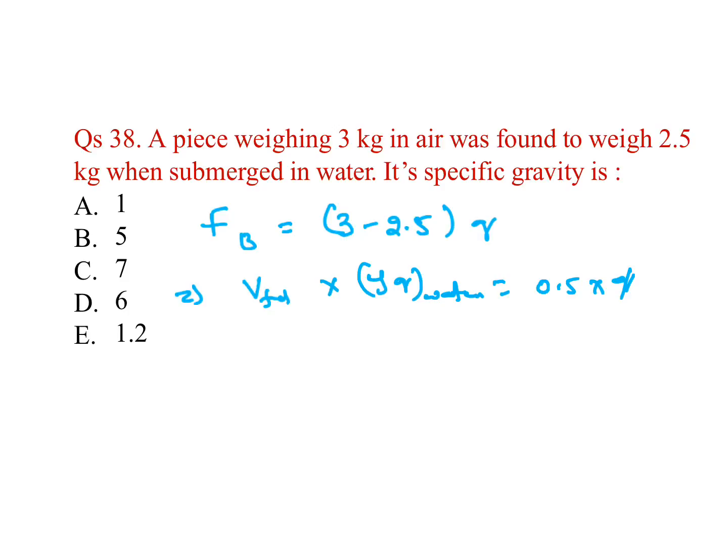One more equation we will get for that: weight, volume of the body v into rho g body equal to weight 3 kg, 3 into g. So from here we will get rho, g g cancel, 3 by v.